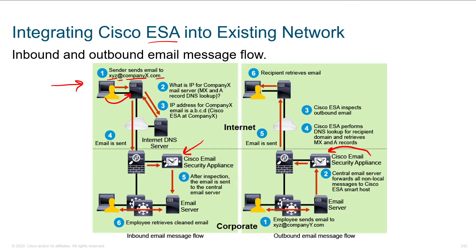The mail server sees that the recipient doesn't live there — it's an external domain — so it needs to resolve it. When you have an email address, it's destined to a domain: some user at the domain. The server responsible for delivery has to do a lookup for what's called the MX record.